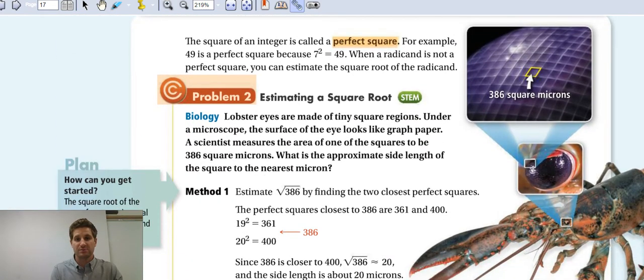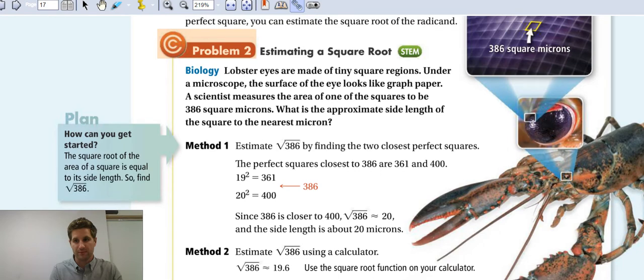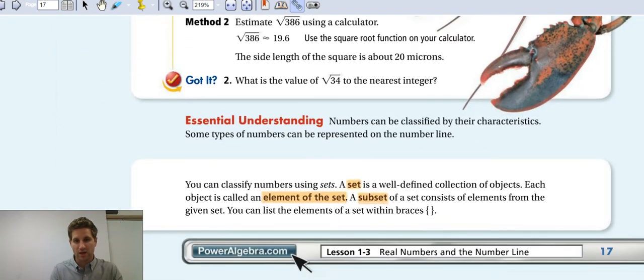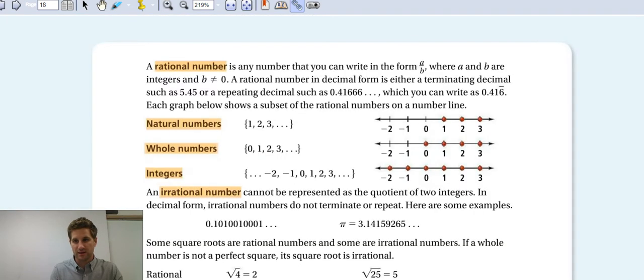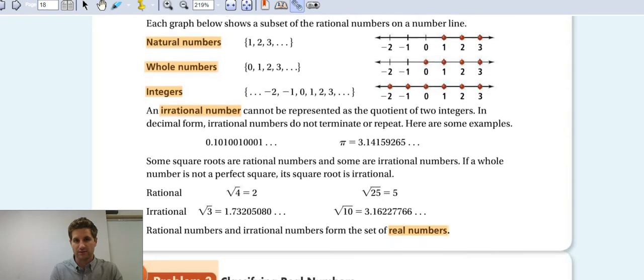We have a special type of square root. We call it a perfect square. And that's when a radicand is not a perfect square, we can estimate the square root. So we're going to take a look at what that looks like. But that's when we have those perfect squares. We'll talk more about that as well. But we don't have to write that one down right now. Don't worry about it.